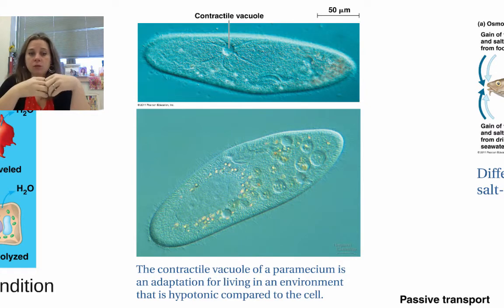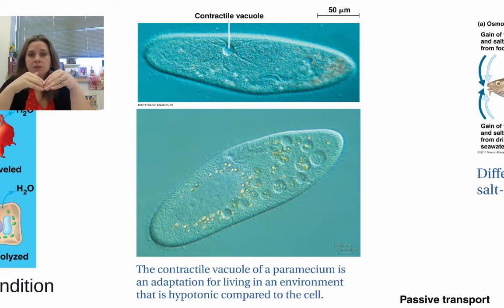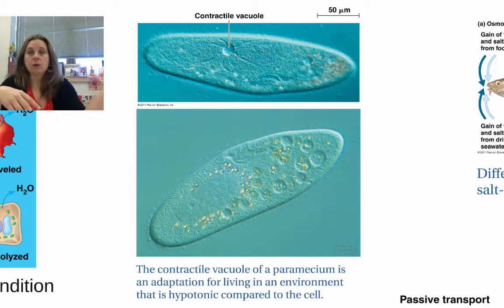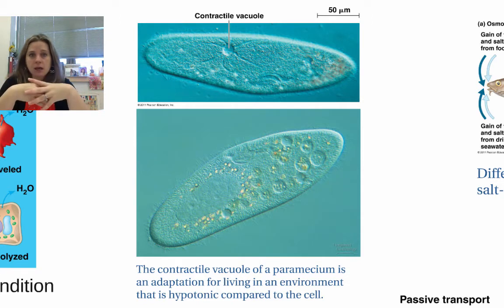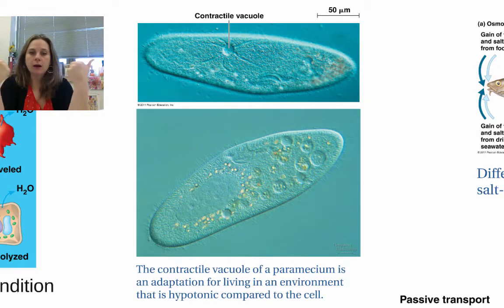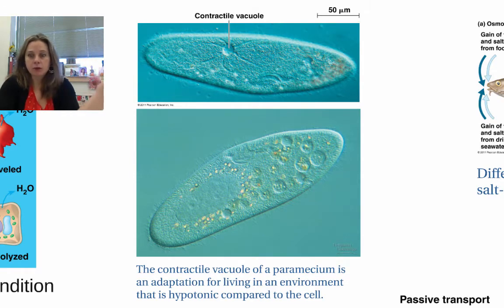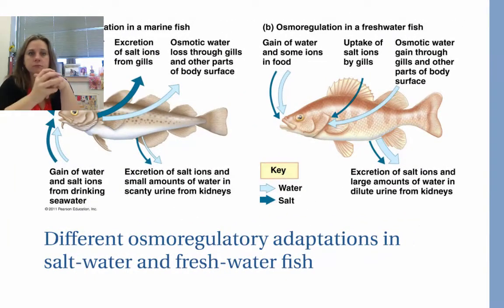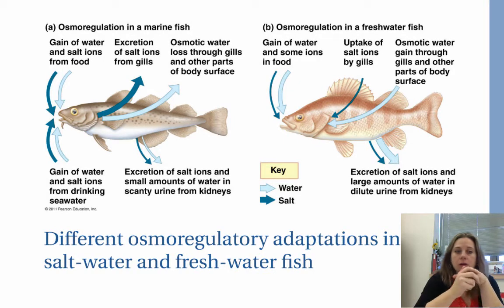The contractile vacuole in some cells helps prevent over-expansion by taking in excess water. It's an adaptation that allows cells like paramecium to live in a hypotonic environment such as pond water. The vacuole takes in excess water and literally contracts, using cellular energy to push water out and prevent the cell from exploding.